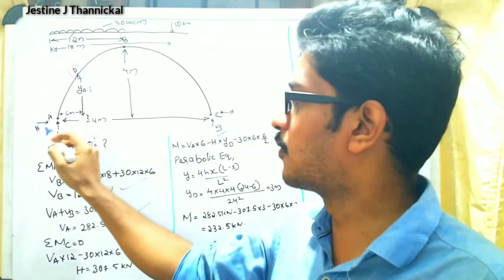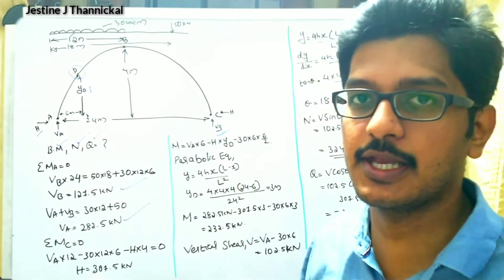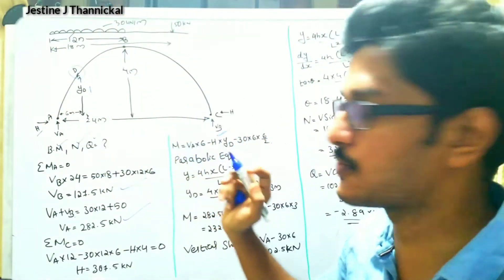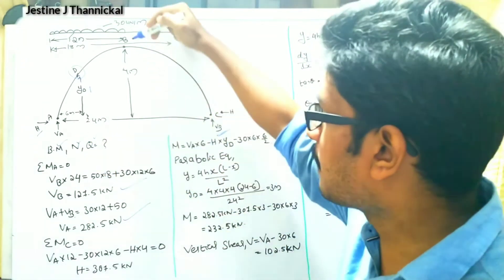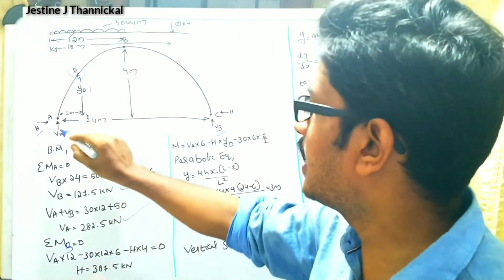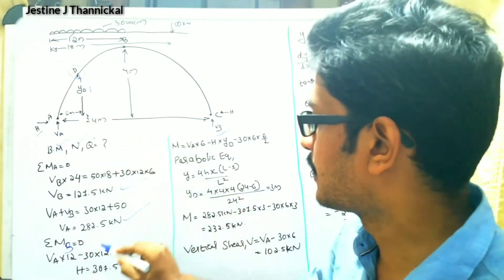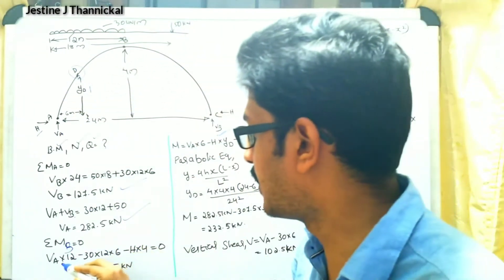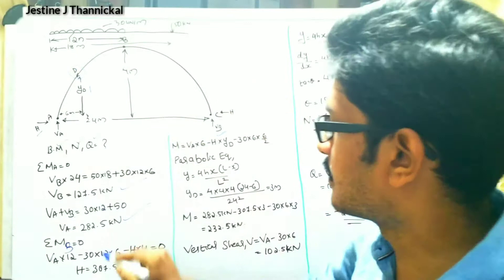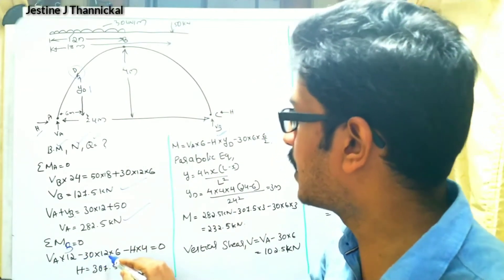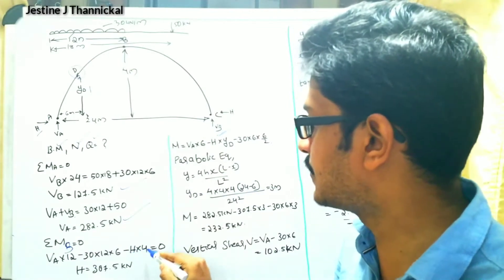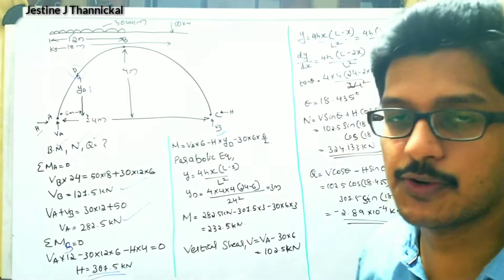Next, we find the horizontal thrust H. Since both horizontal thrusts are equal and no horizontal force is acting, we use sigma M at the crown point B equals zero. Taking VA multiplied by 12 in the clockwise direction, minus 30 multiplied by 12 multiplied by 6 in the anti-clockwise direction, minus H multiplied by 4 equals zero. Solving, we get the horizontal thrust H equals 307.5 kN.